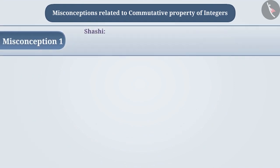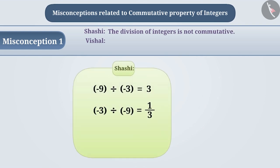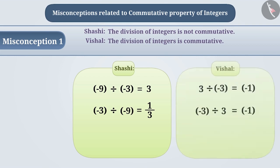Misconception 1. One day, Shashi and Vishal were practicing the commutative property of division of integers. Shashi said that the division of integers is not commutative, and she gave an example to support her point. But Vishal was not ready to accept this. He said that the division of integers is commutative, and he gave an example to prove his point. Can you tell me who is right here?